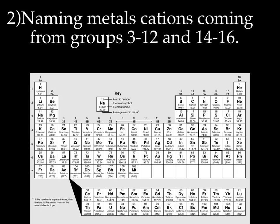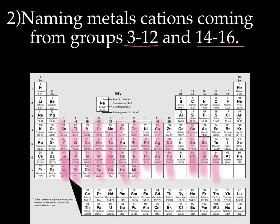Now let's try naming cations coming from metals in groups 3 through 12, and 14 through 16 — that's all the transition metals. The way I remember it, instead of trying to remember the rule for groups 3 through 12 and 14 through 16, I remember they're the metals that are not groups 1A, 2A, or 3A.